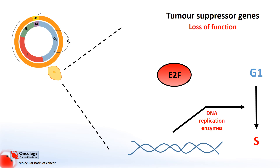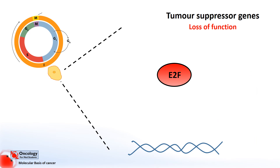In cells, E2F is normally bound to another protein called retinoblastoma, or RB. The function of the retinoblastoma protein is to inactivate the E2F protein and stop the cell's DNA from replicating. Hopefully you're now seeing why the RB protein is considered to be a tumour suppressor — it's stopping the cell from going past the G1 checkpoint.